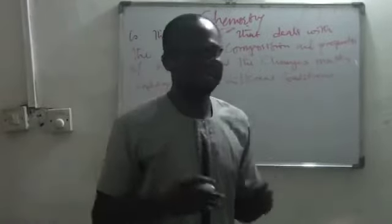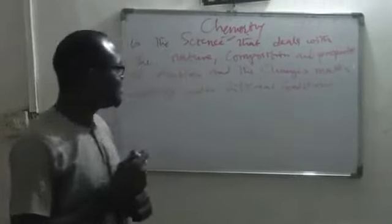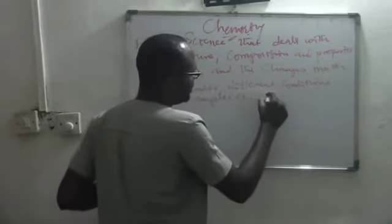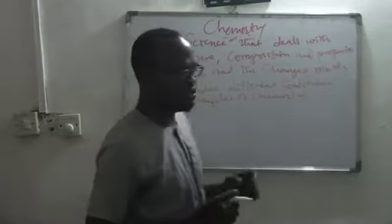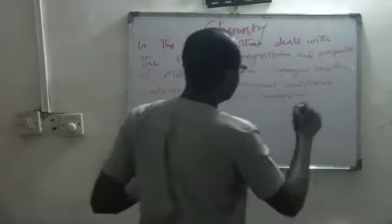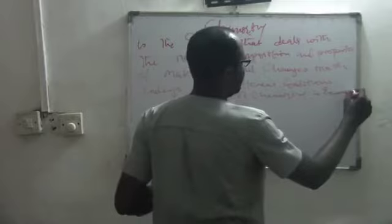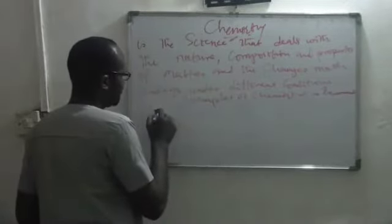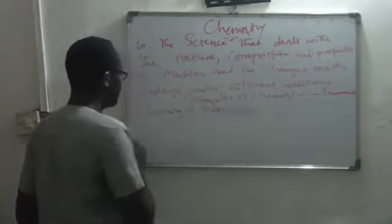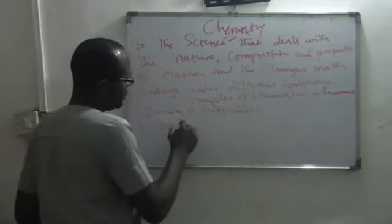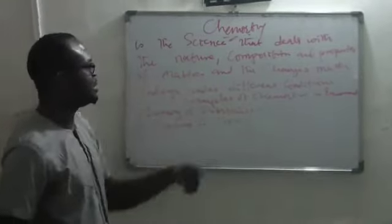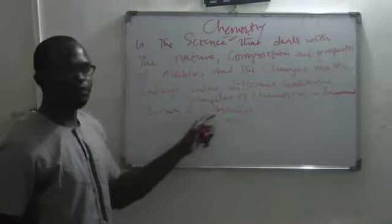So that is what chemistry is, and that is what we've been covering in our lectures. Examples of chemical processes that occur around us: number one, burning of substances — burning of substances can be explained using chemistry. Number two, rusting of iron — rusting of iron is a chemistry phenomenon, just as burning of substances.